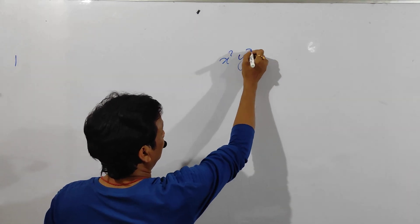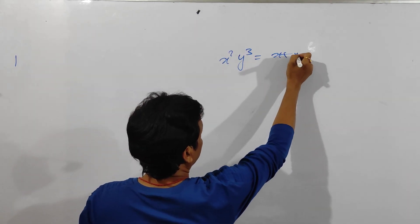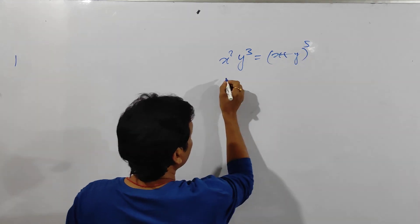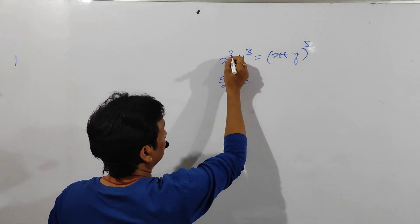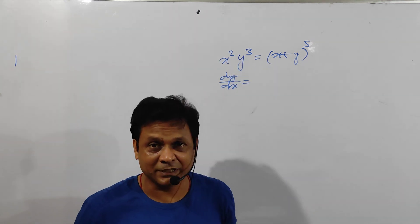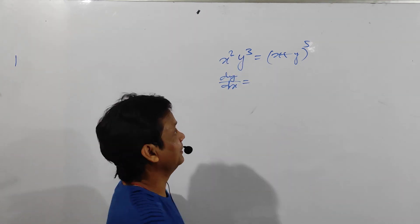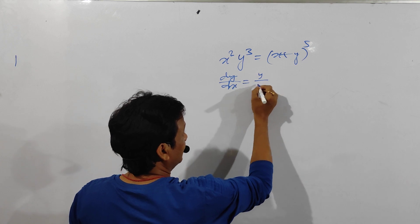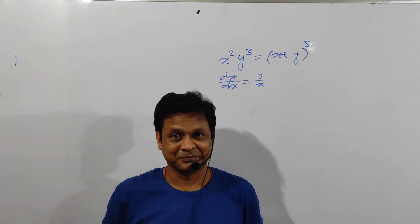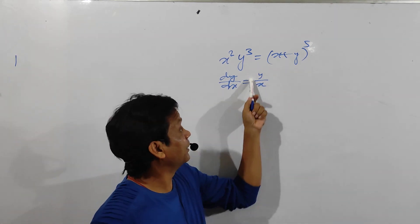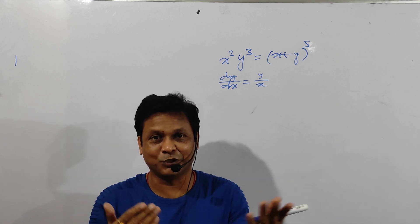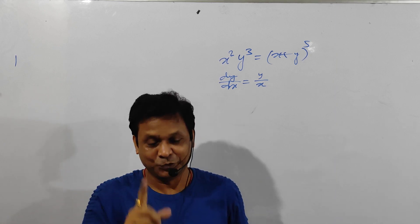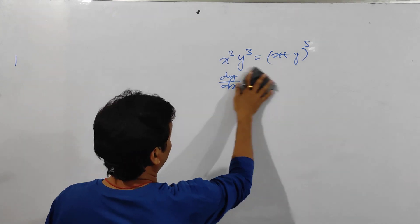x to the 2, y to the 3, which equals x plus y to the power 5. So what will be dy by dx? Can you tell me the answer? See, the answer is y by x and it takes only one or two seconds, less than two seconds, more than one second.